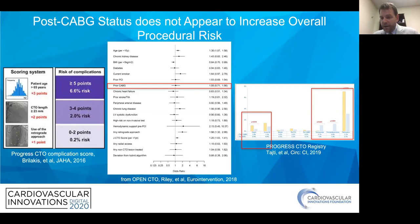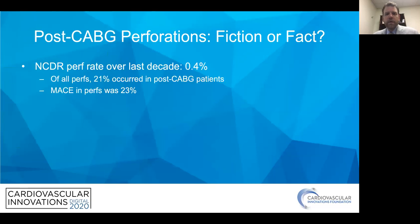On the other side, prior CABG patients had more perforations, but it was less often a big deal — meaning less risk of tamponade and pericardiocentesis — because major areas of the pericardium have been taken away by prior bypass surgery. So overall risk is not increased, but certain specific risks are increased comparatively when you're post-bypass.